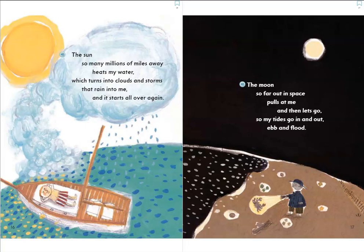The sun, so many millions of miles away, heats my water, which turns into clouds and storms that rain into me — and it starts all over again. The moon, so far out in space, pulls at me and then lets go, so my tides go in and out, ebb and flood.